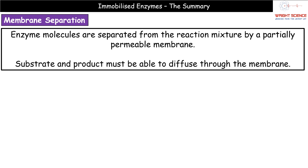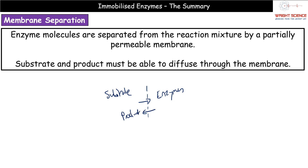The fourth method is membrane separation — just that term is fine for exam questions on how we immobilize an enzyme. The enzymes are separated from the reaction mixture by a partially permeable membrane, which only allows certain substances to cross. The substrate and product must be able to cross the membrane to reach the enzymes and for the product to return to the other side, but the enzymes must not be able to diffuse through that partially permeable membrane.